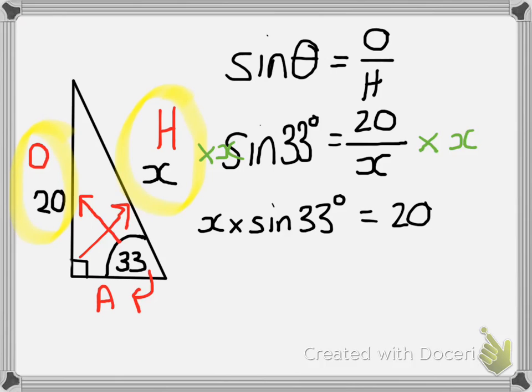On the left hand side of the equation, we still have the x attached to the sin 33 by a times. To get rid of that, to get rid of the sin 33 and to leave x by itself, we have to do the opposite of timesing by sin 33. So we have to divide both sides by sin 33.